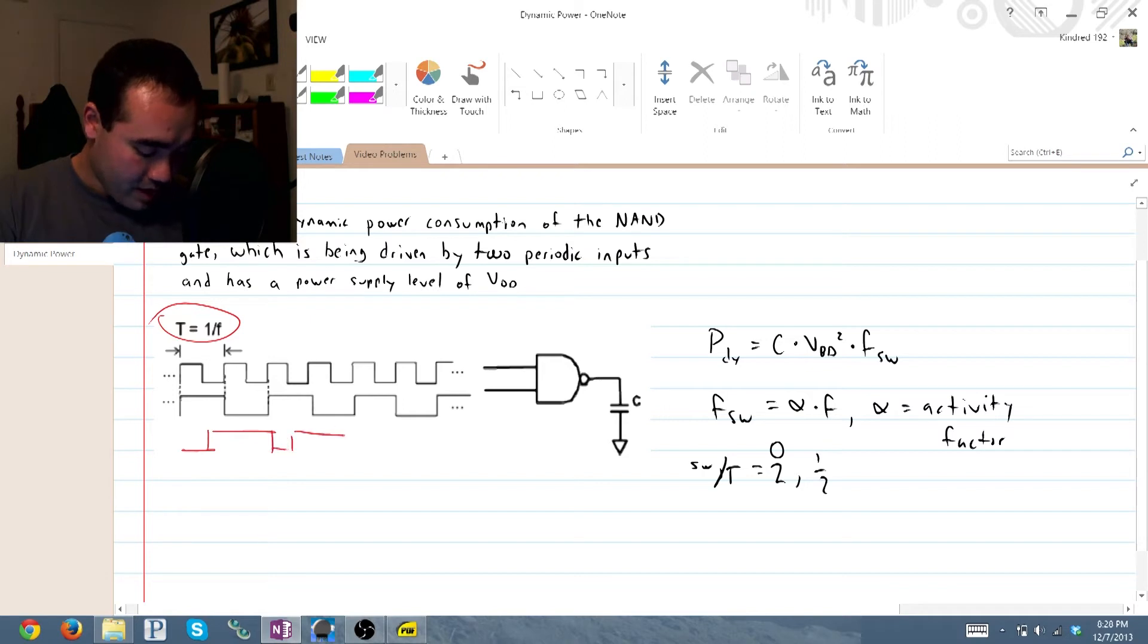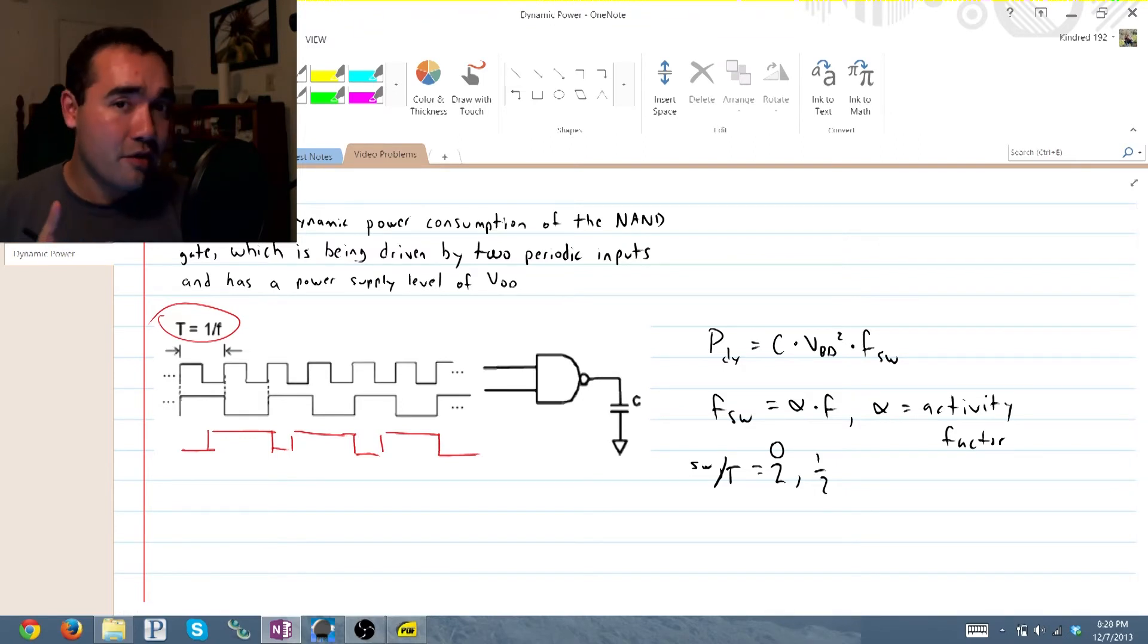So our output looks something like this. That's a very crude drawing, but you can see that the output is also periodic because both inputs are periodic and they happen simultaneously. They both change simultaneously.